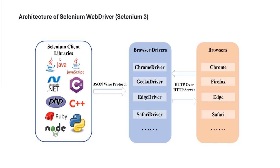Selenium Client Libraries — so Selenium contains Selenium Client Libraries, browser drivers, and then the browsers. Here's the communication flow: suppose you use any of the IDEs like Eclipse, and then you write your test using one of the programming languages. After you write it, it has to communicate with the browser driver. Whatever you write gets converted into the JSON wire protocol — it gets converted into JSON format. JSON is basically JavaScript Object Notation. Using that, it communicates to the browser driver.